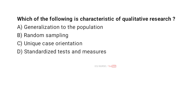Which of the following is characteristic of qualitative research? A. Generalization to the population. B. Random sampling. C. Unique case orientation. D. Standardized tests and measures. And the correct answer is C. Unique case orientation.